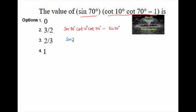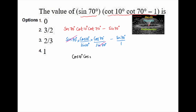We can write sine 70 degrees, and cotangent is nothing but cos over sine, so cos 10 degrees over sine 10 degrees, times cos 70 degrees over sine 70 degrees, minus sine 70 degrees. Here we can cancel sine 70 degrees, and by taking LCM we get cos 10 degrees times cos 70 degrees minus sine 70 degrees times sine 10 degrees, all over sine 10 degrees.